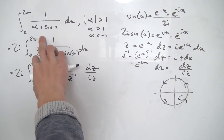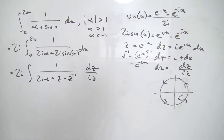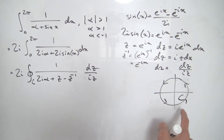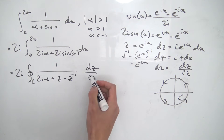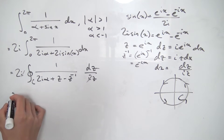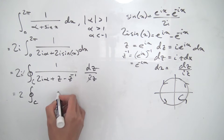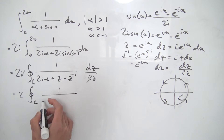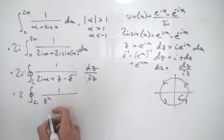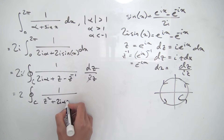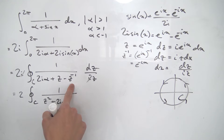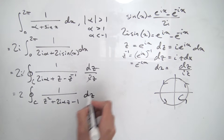We'll use Cauchy's residue theorem to evaluate this contour integral. Simplifying: the i in the denominator cancels with the 2i out front, and distributing z into the denominator gives 2 times the contour integral over C of 1 over (z² + 2i·alpha·z − 1) dz. So we have a rational function whose denominator is a quadratic, meaning it has two poles.